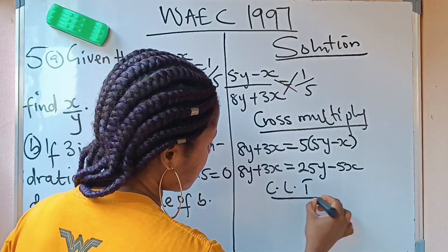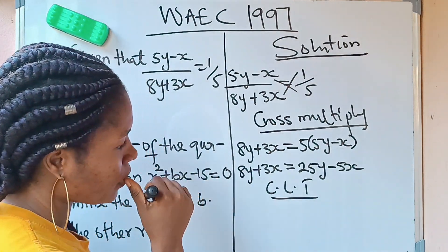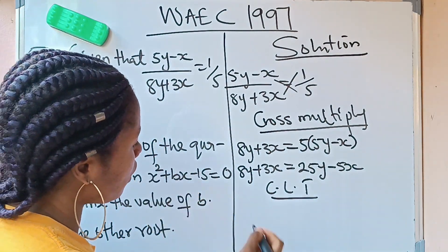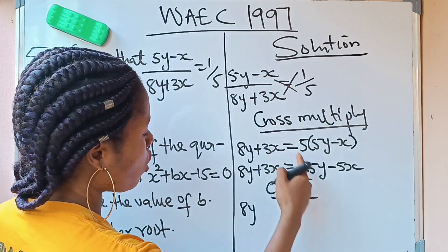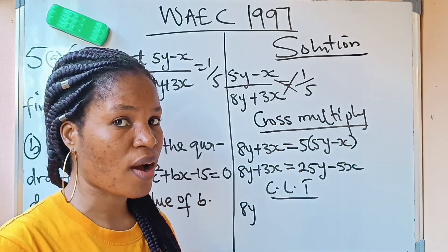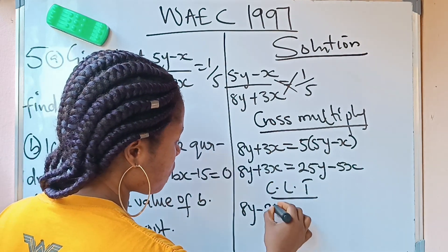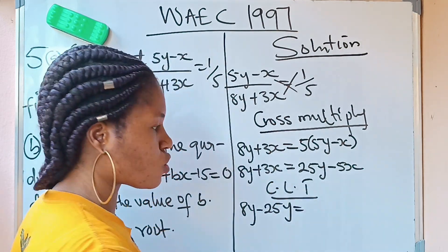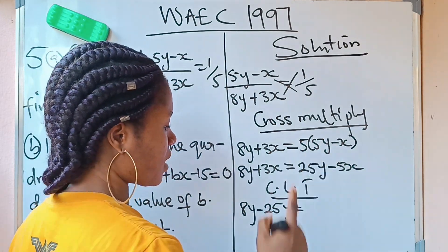So you collect your like terms now. This 8y... I want this 25y to come to it. And if that should be the case, this 25y is something as plus 25y, right? So if it crosses this equation, it becomes minus 25y equals... now when this 25y left, minus 5x was remaining.